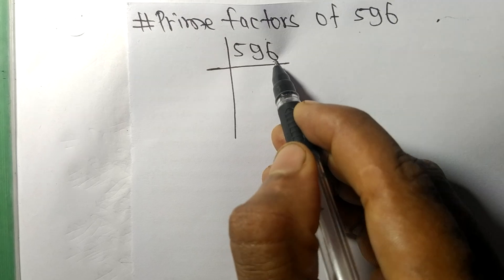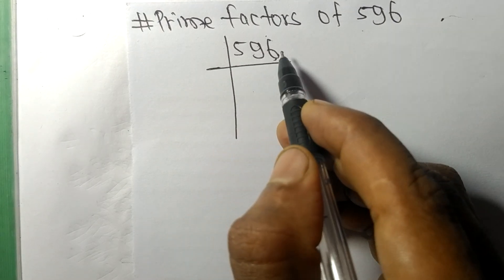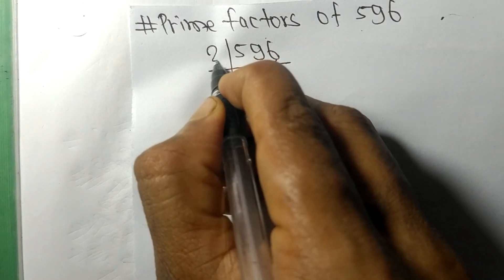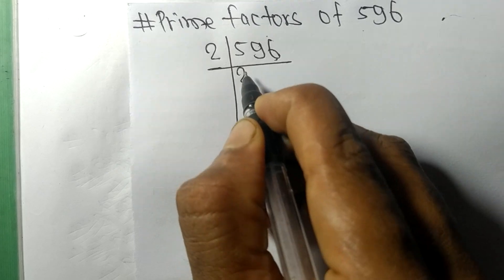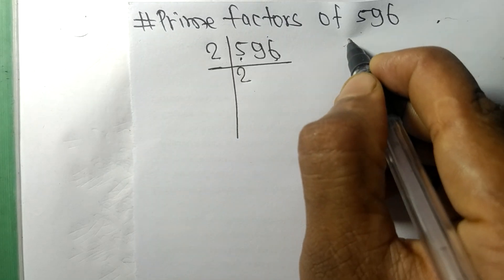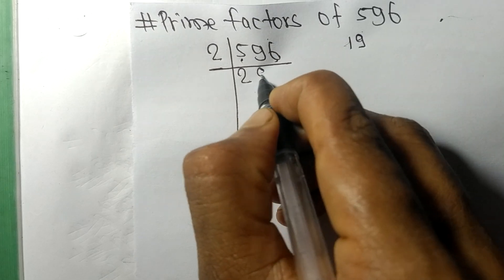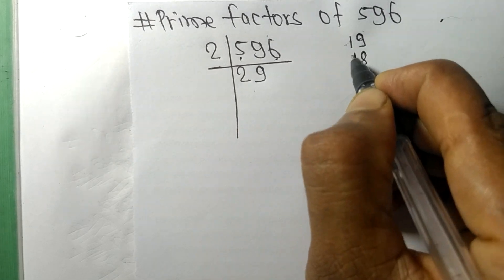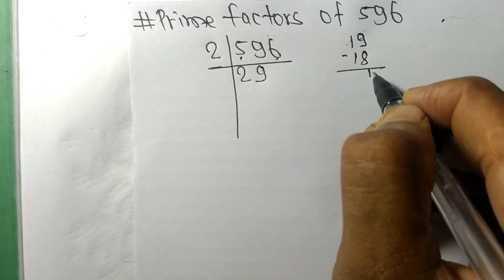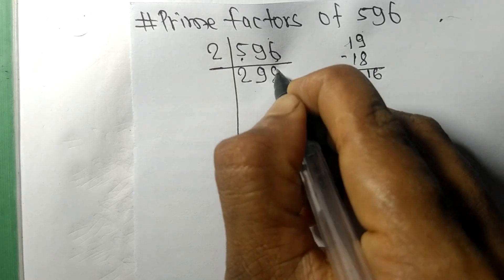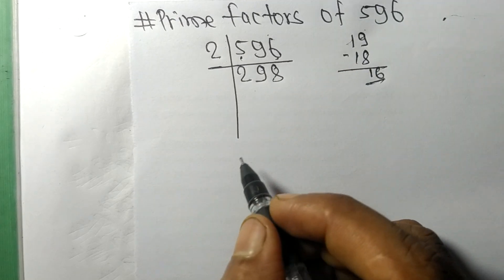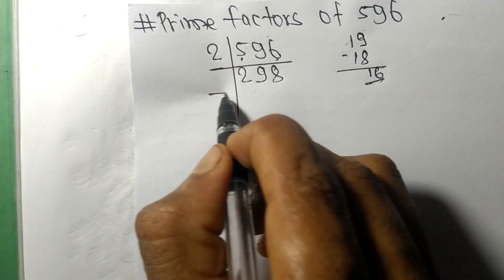It has an even number 6 at the end, so the whole number is divisible by 2. 2 times 2 means 4, remainder 1. Then 19, 2 times 9 means 18, remainder 1. And this 16, 2 times 8 means 16. Again we have an even